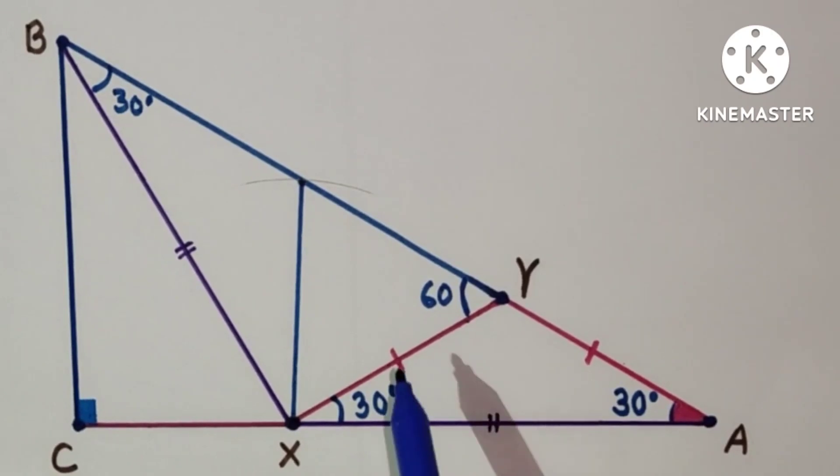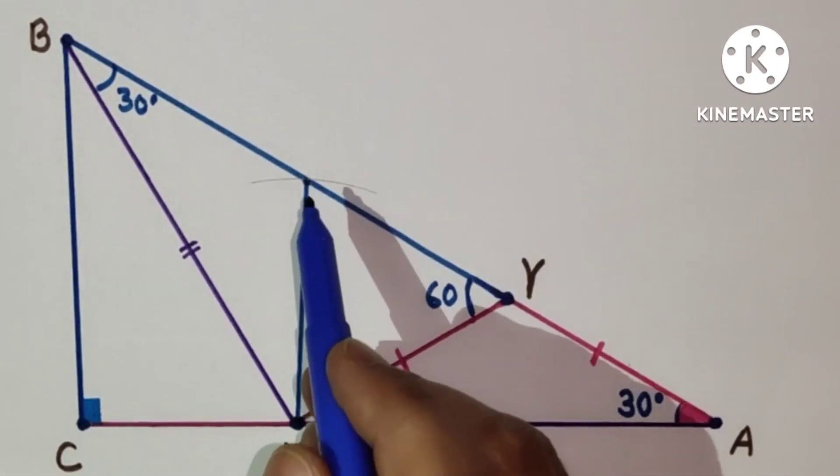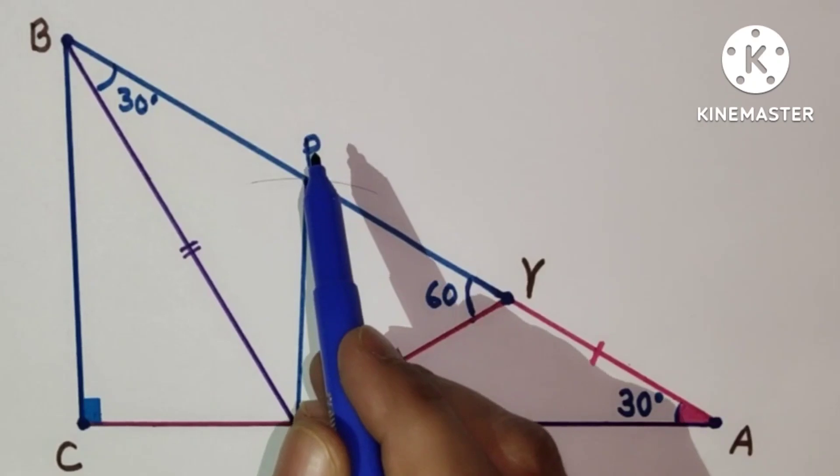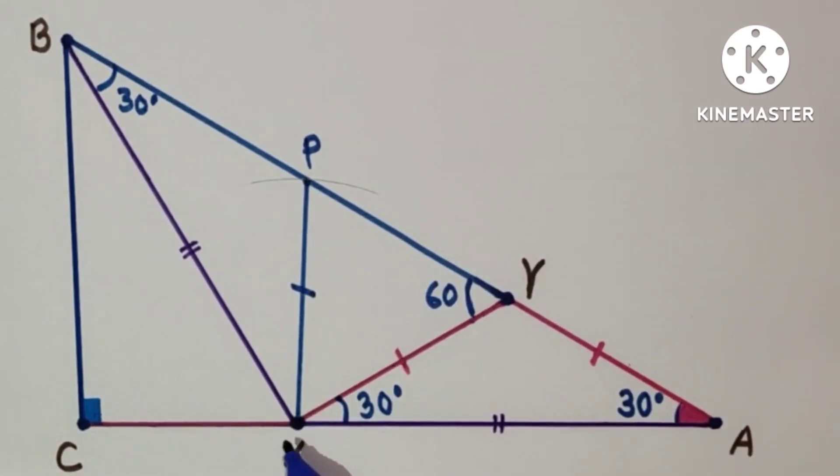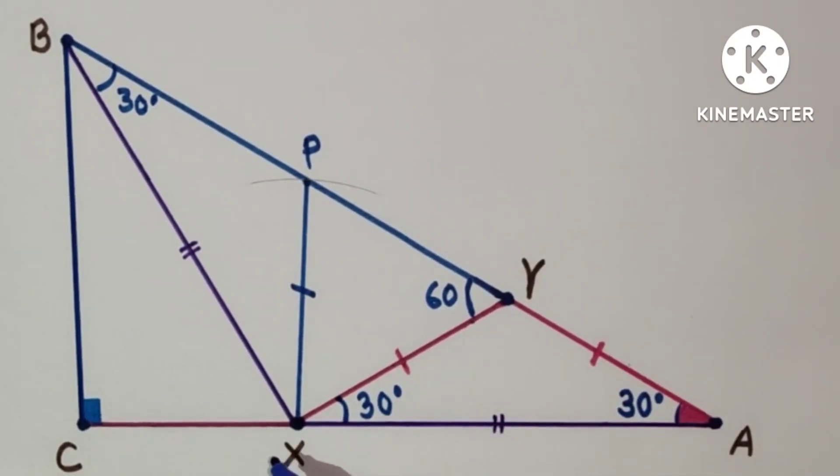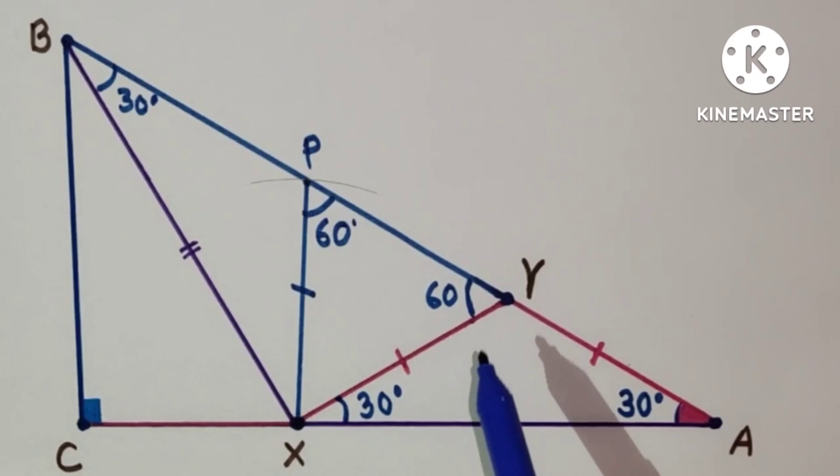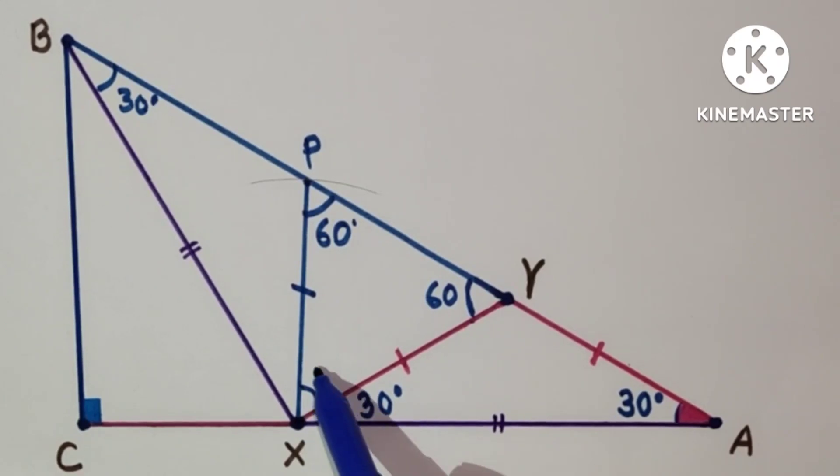In construction we have drawn XP equal to XY. Let us suppose this point is P. Now triangle XYP is an isosceles triangle because XY equals XP. So this angle will also be 60 degrees because base angles are equal. These two angles are 60 degrees, so the third must be 60 degrees. All angles are 60-60-60, so this triangle is an equilateral triangle. Therefore PY will also be equal to XY and PX.